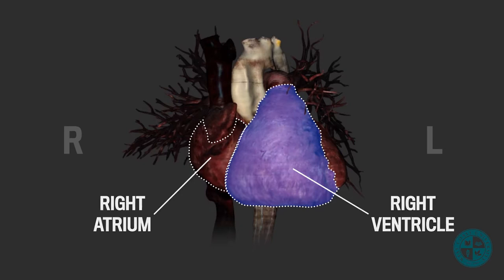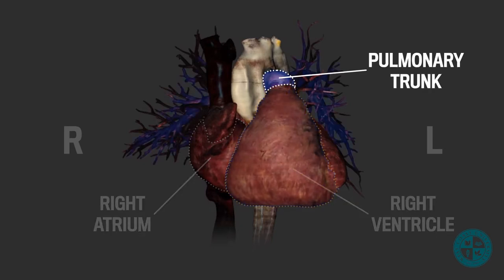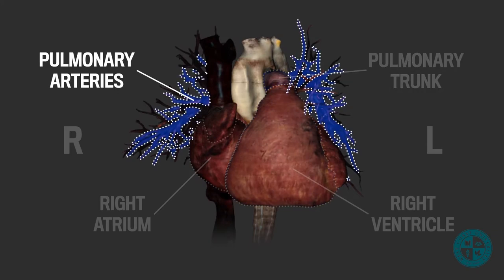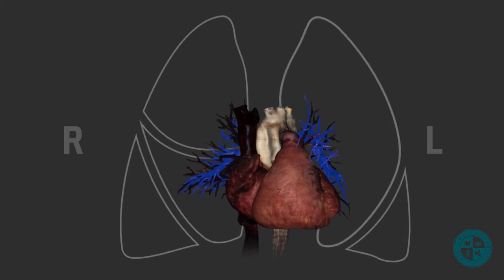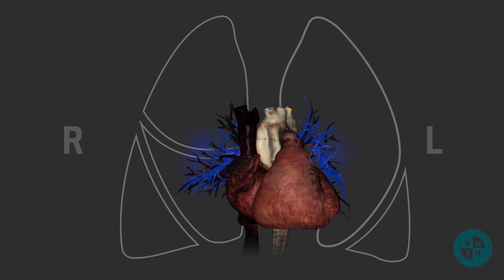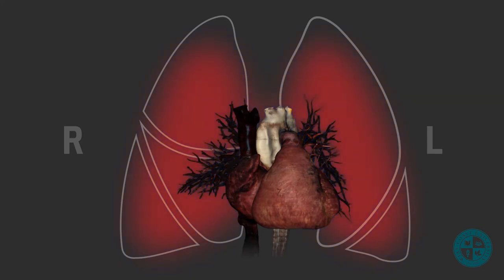The right ventricle will pump blood into the pulmonary trunk, which branches into the pulmonary arteries. The pulmonary arteries will then continue to branch into smaller and smaller arteries and arterioles until we reach the capillary network. The capillaries are the site of gas exchange — the capillary network in the pulmonary circuit is where we exchange CO2 gas for O2 gas.